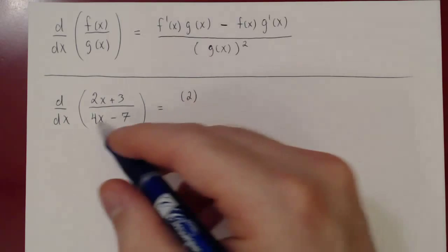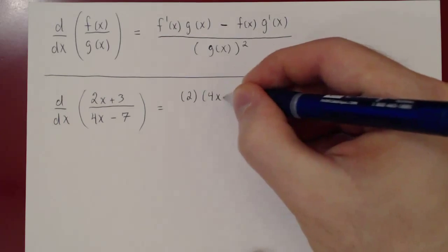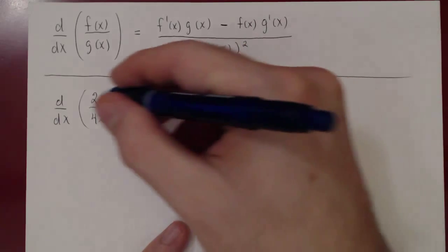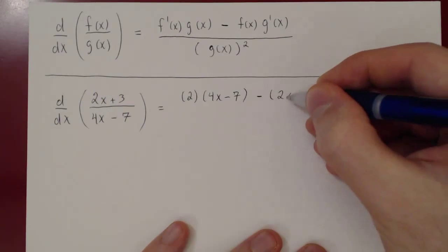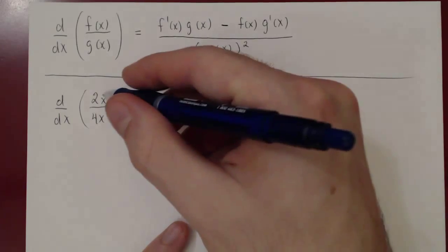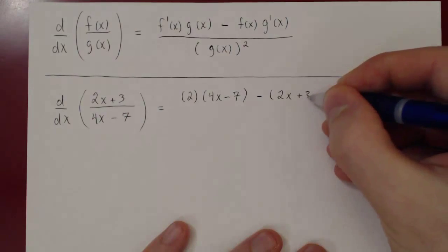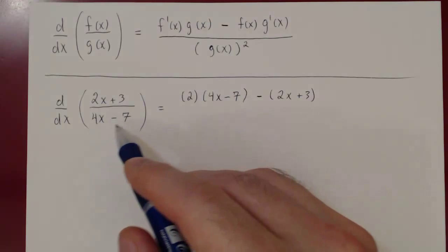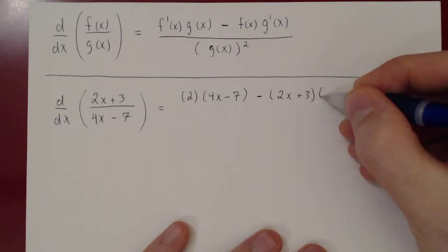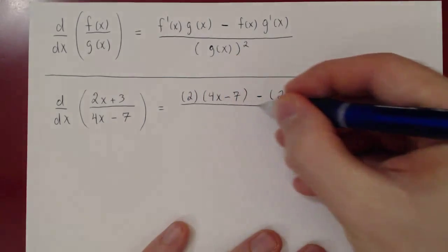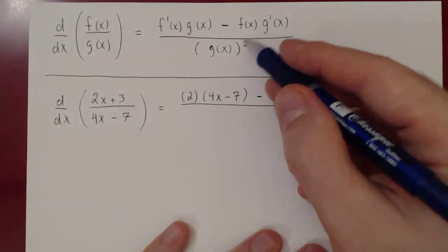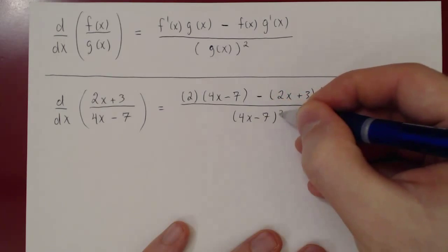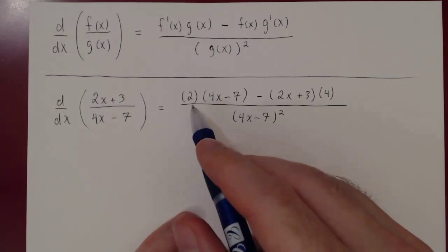So we have 2 times the bottom (4x − 7), minus the numerator (2x + 3) — and here be careful to use brackets, because it's the negative of all of f(x), so the negative of all of (2x + 3) — times the derivative of the bottom. The derivative of (4x − 7) is just 4. This is all over g(x) squared, so (4x − 7) all squared.